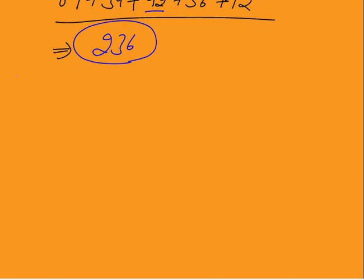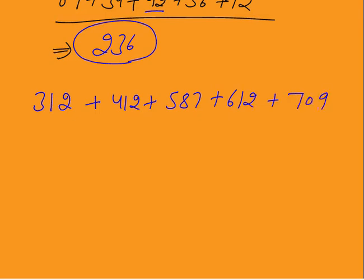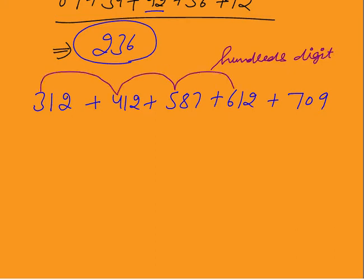Now, what if 3-digit numbers come? For example: 312 plus 412 plus 587 plus 612 plus 709. Suppose you need to add 3-digit numbers, like when calculating averages. I told you only to learn two-digit addition. So first I will add the hundreds digits: 3 plus 4 is 7, plus 5 is 12, plus 6 is 18, plus 7 is 25.